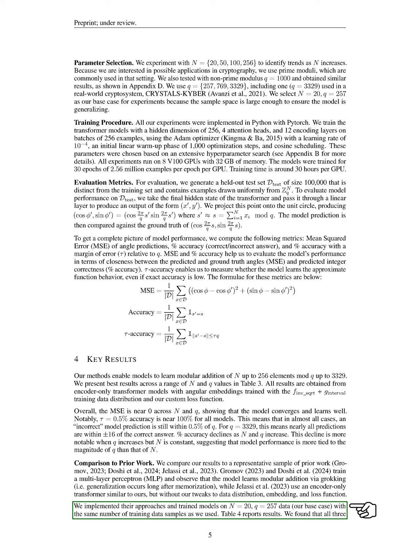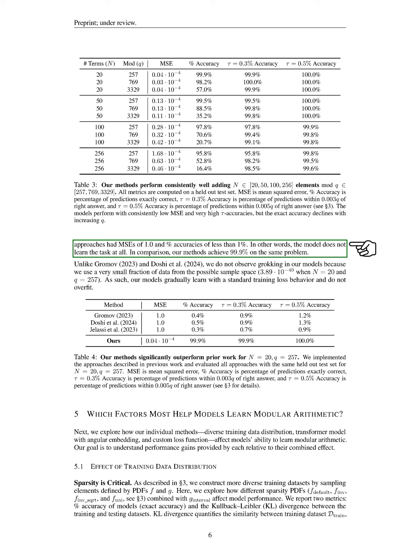We also implemented similar approaches without our specific adjustments and found that their models did not learn the task effectively, achieving MSEs of 1.0 and accuracies below 1%. In contrast, our methods achieved an accuracy of 99.9% on the same problem. Unlike previous studies, we did not observe grokking in our models, as we used a very small fraction of the possible data, allowing our models to learn gradually without overfitting.